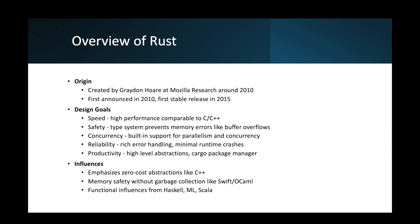As per safety, its type system prevents memory errors like buffer overflows. It has a strong type system which tracks object lifetime and ownership to prevent unsafe behavior. There are no null pointers, iterator bound checks, or data races. That's why it's safer. It also forces handling of errors instead of ignoring them.